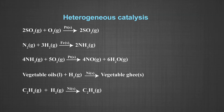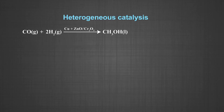Number five, conversion of ethene to ethane in presence of platinum, palladium or nickel — it is the process of hydrogenation. The reactant is in the gaseous phase and the catalyst is in the solid phase. Number six, the reaction between carbon monoxide and hydrogen to give methyl alcohol in presence of copper and zinc oxide as catalyst and chromic oxide as promoter. The reactants are gases and the catalyst and promoter are solids.